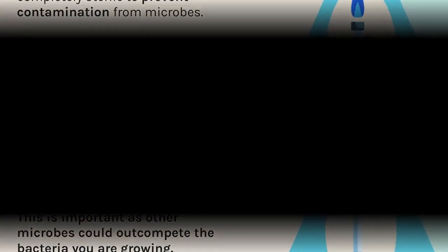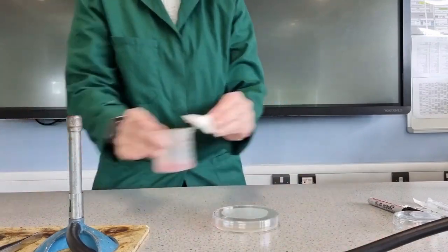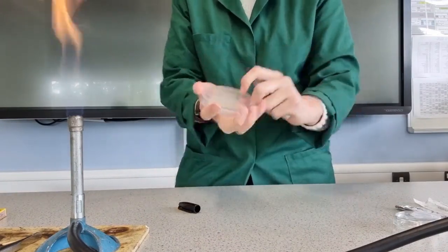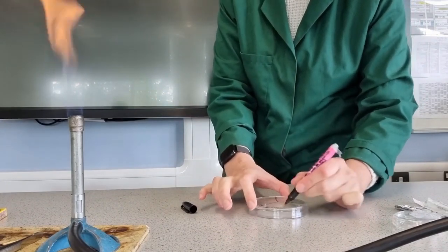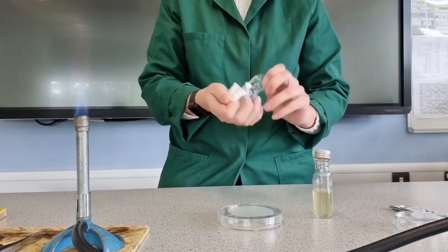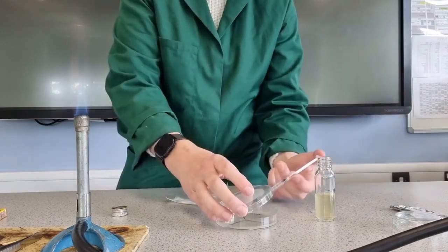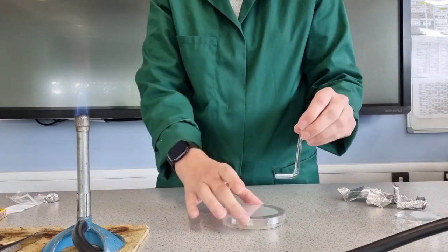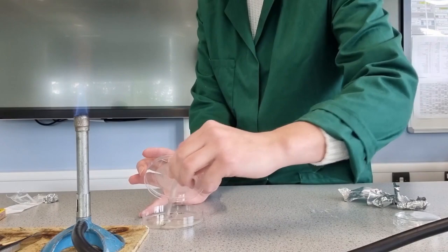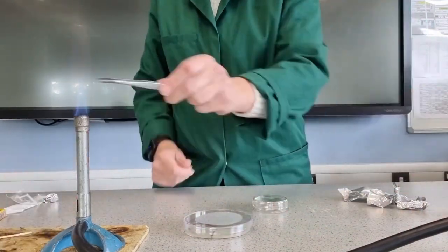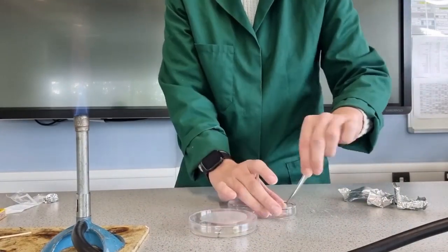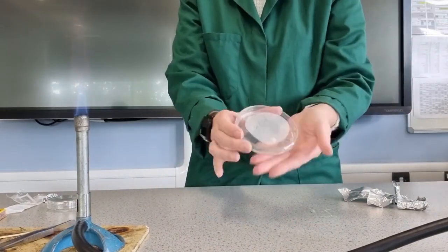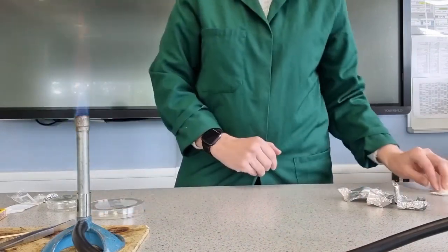Let's watch the method. First you disinfect your work surface, then light the Bunsen burner - hands washed with antiseptic gel. Label the petri dish with your initials, the date, and the bacteria name - in this case E. coli. Split the dish into three sections so you know where to place the discs. Apply the bacteria and immediately sterilize the syringe. Using a sterile spreader, spread it evenly all over the plate while working near the Bunsen burner. Then use sterile forceps to place the three antimicrobials in the three sections.